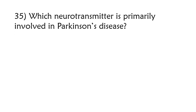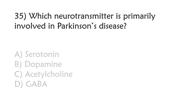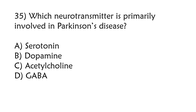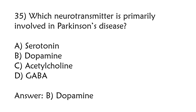Which neurotransmitter is primarily involved in Parkinson's disease? Serotonin, Dopamine, Acetylcholine, GABA. The correct answer is Option B: Dopamine.